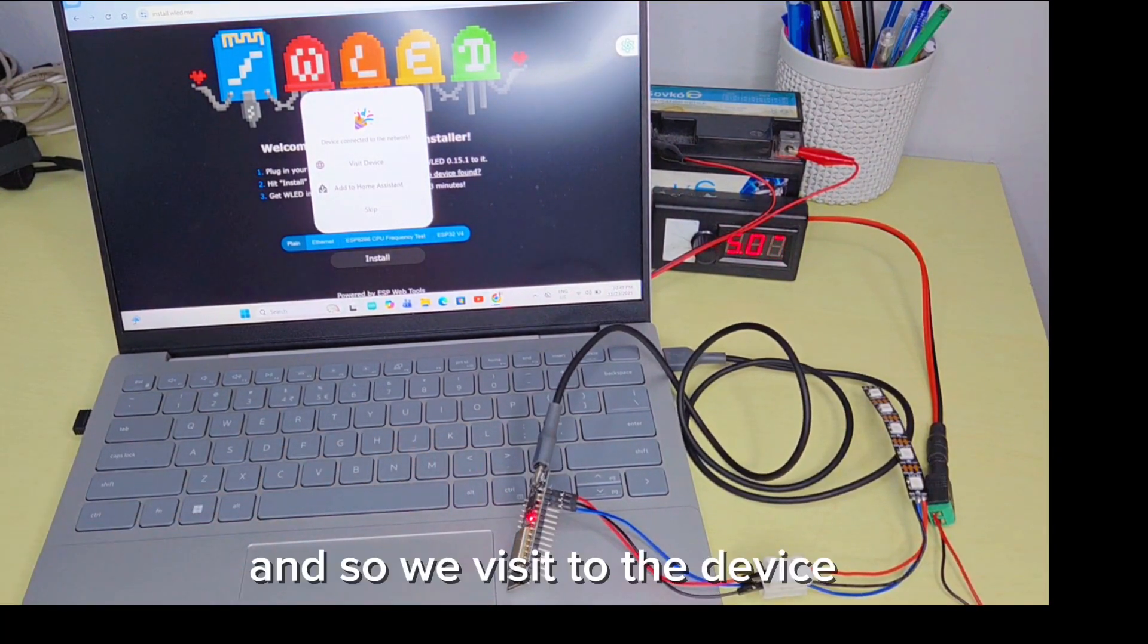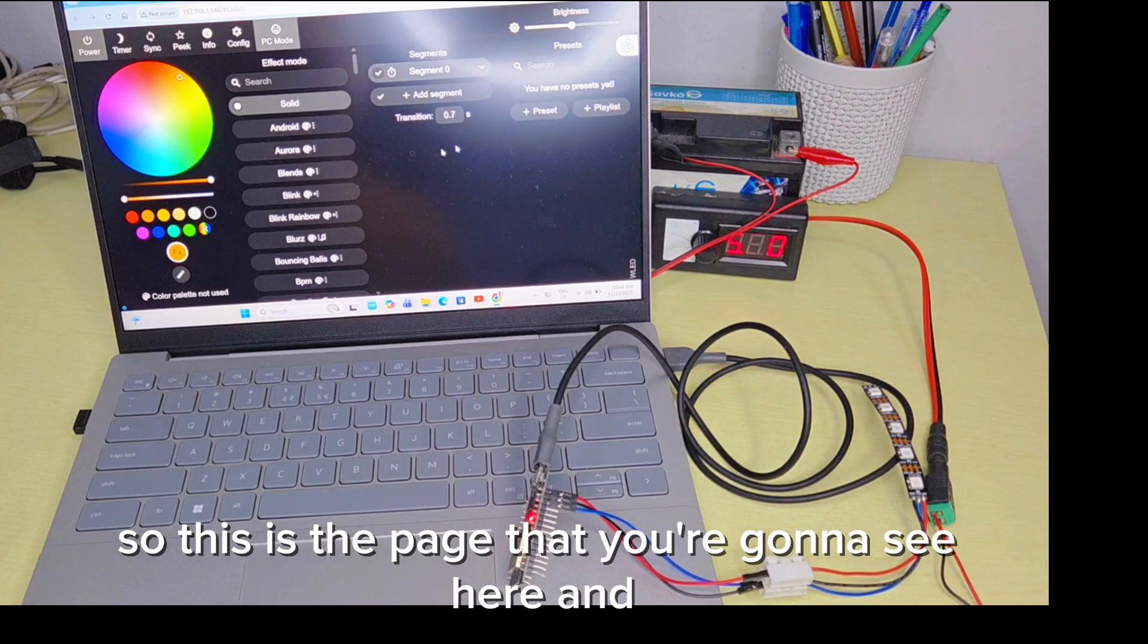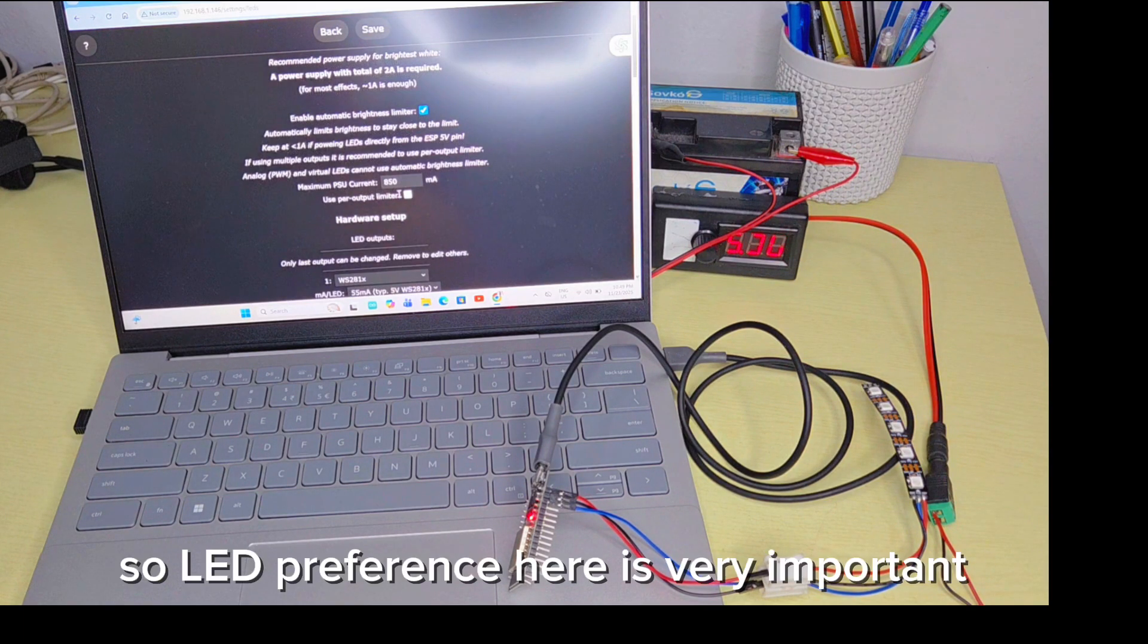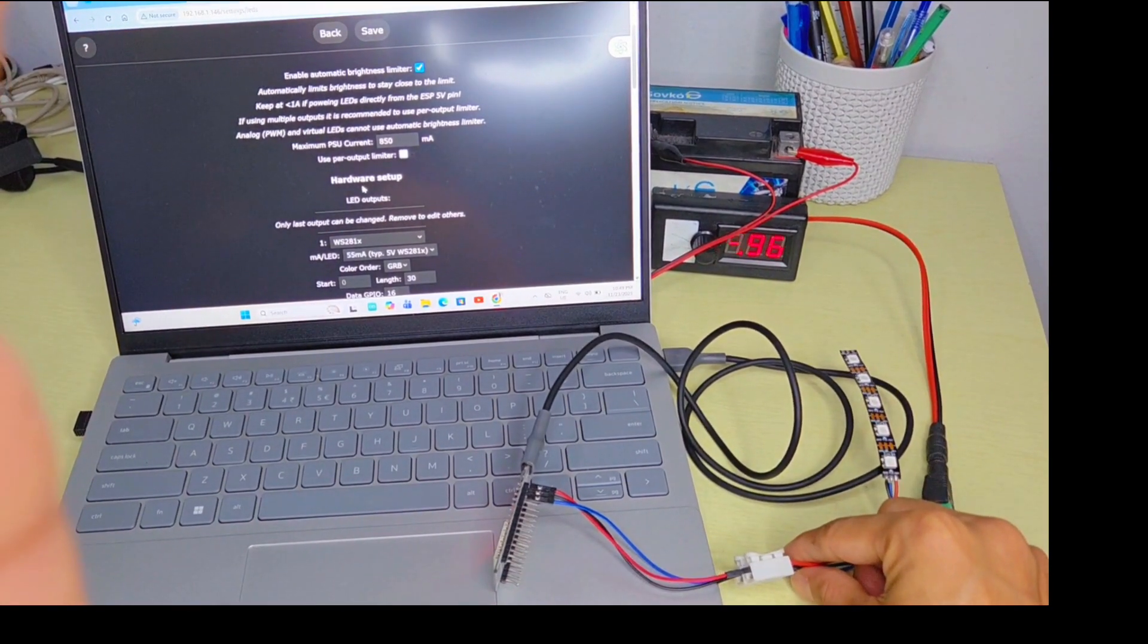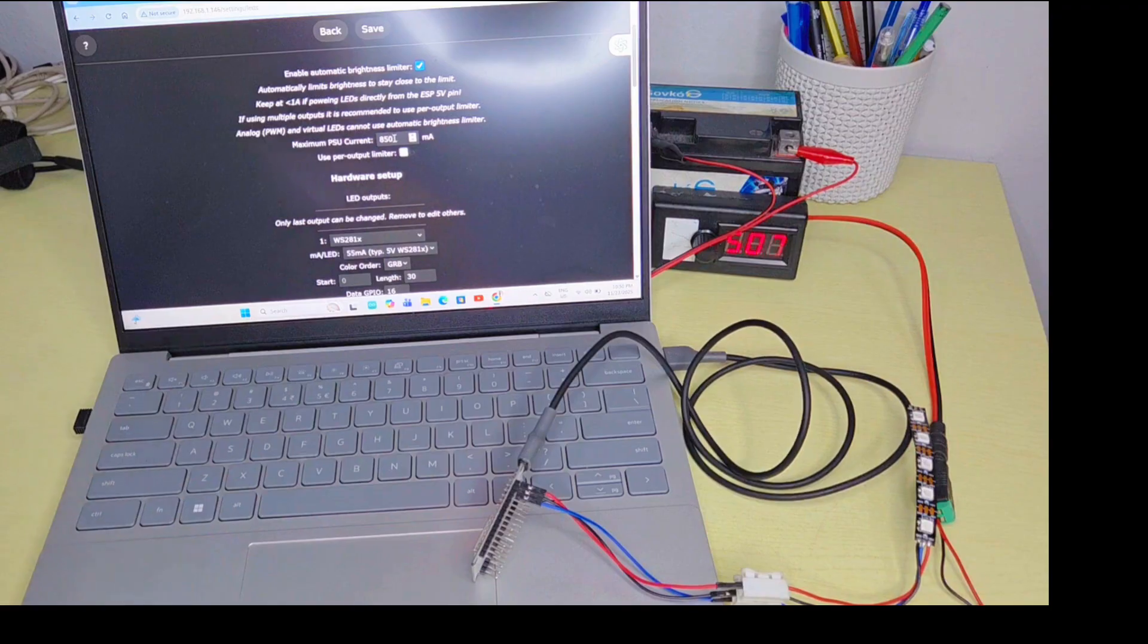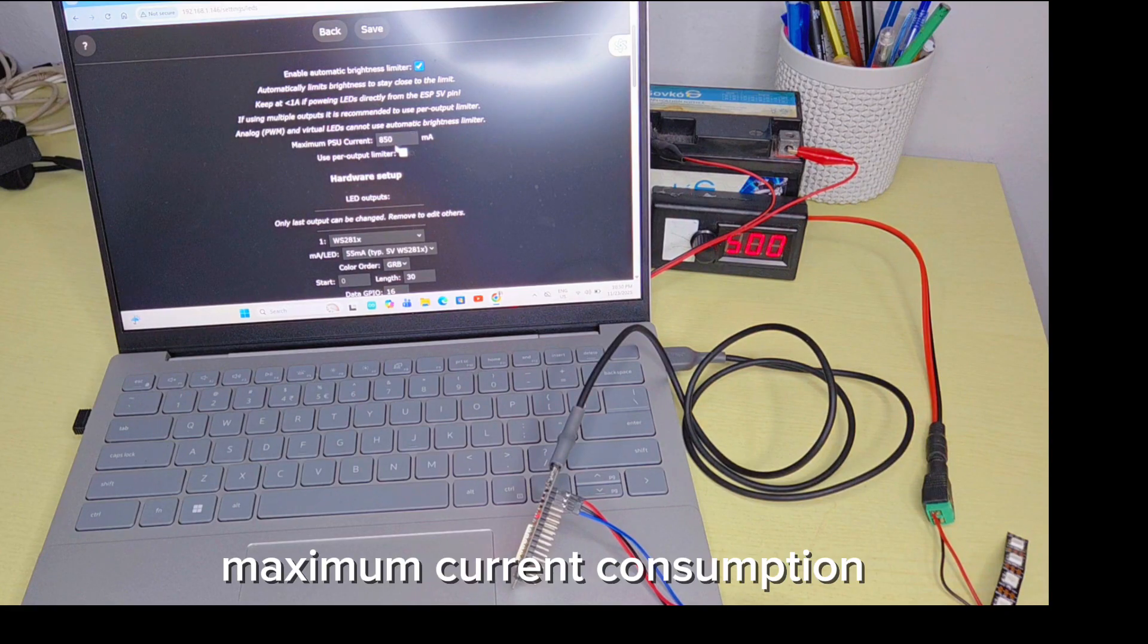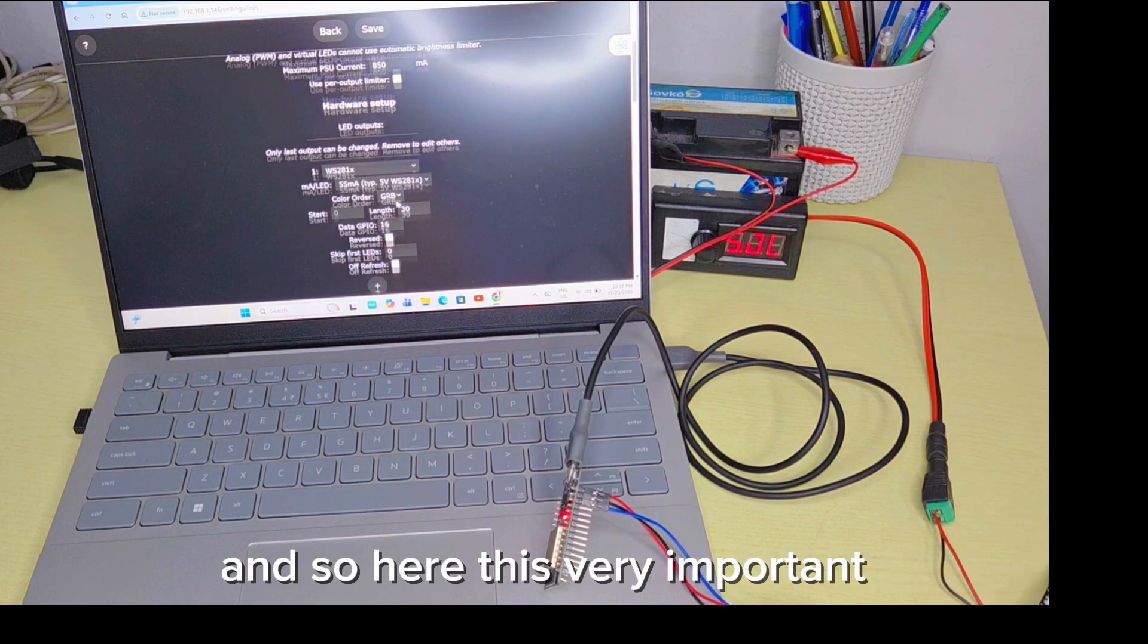We visit to the device. This is the page you're going to see. Go to configuration and LED preference. LED preference here is very important. We are using the power directly from ESP32. The ESP32 pin can only handle below 1 ampere. We cannot use so much current or your ESP can be burned. It's 850 milliamp, that's okay for maximum current consumption.